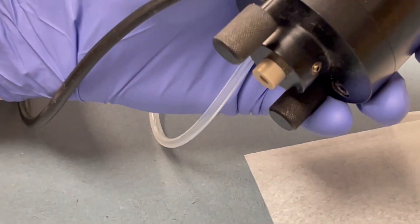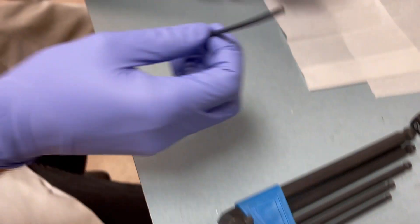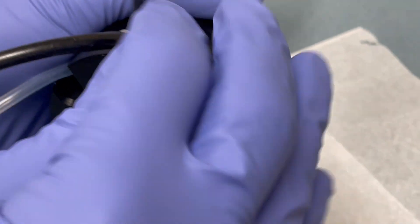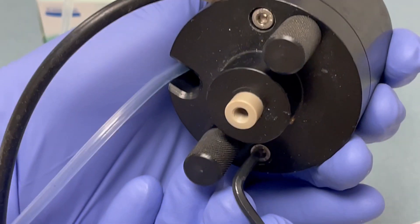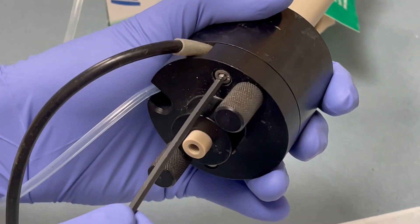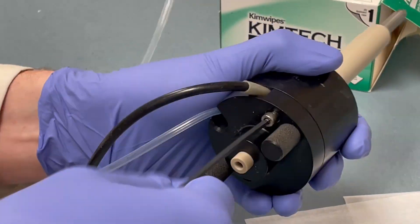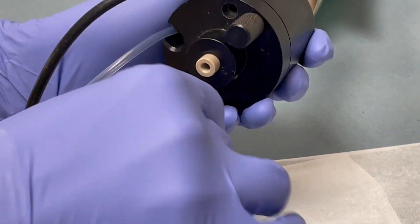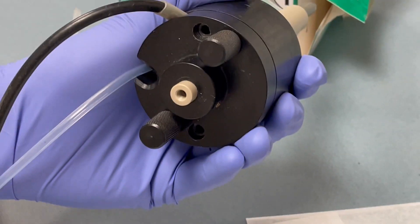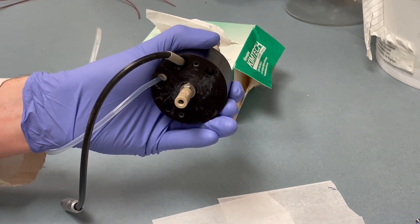Next thing that you need to do is take the bolts out of the top. I'm using a three millimeter Allen wrench for this. Now that both of the screws are out we can wiggle the top off of the source.